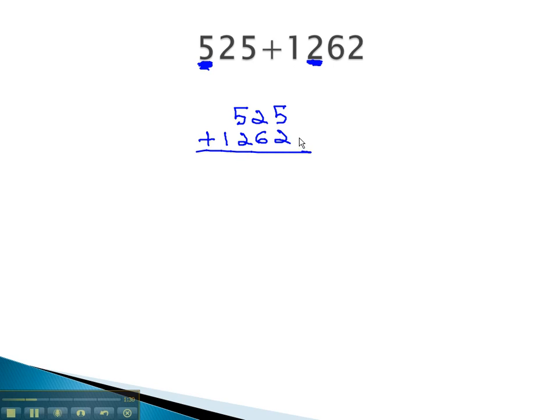Now that everything lines up, we can add from right to left. First, 5 plus 2 is 7, 2 plus 6 is 8, 5 plus 2 is 7, again. And finally, at the end, we have a 1.